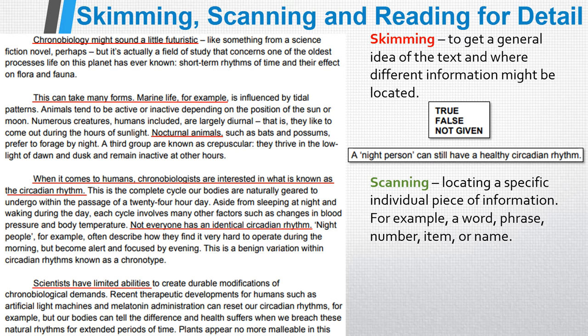Now I need to scan through the paragraph for 'a night person.' The IELTS examiners rarely use words that exactly match the statements, so they're probably not going to say 'night person' — they're probably going to say something slightly different. I'm going to scan through the text to look for something to do with 'night person' or 'night people,' and there we go — it's quite easy to spot: 'night people.' I just scanned through looking for something to do with night or night people, and there it is.